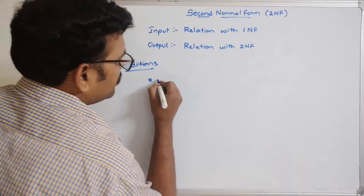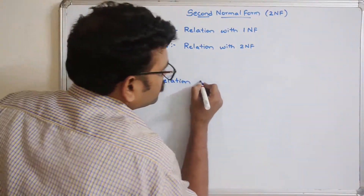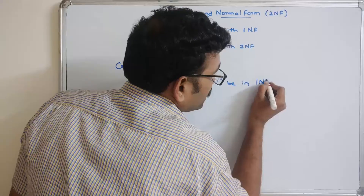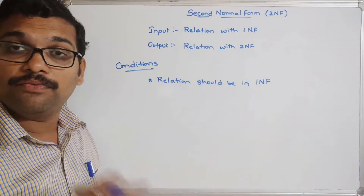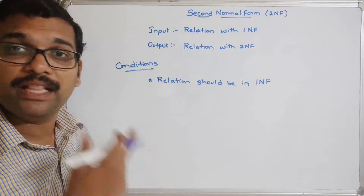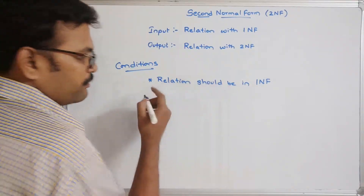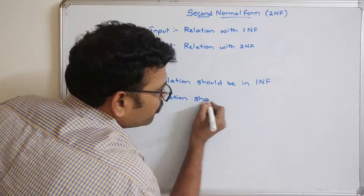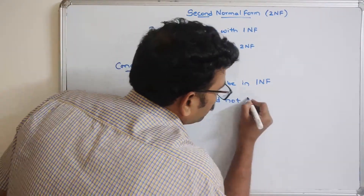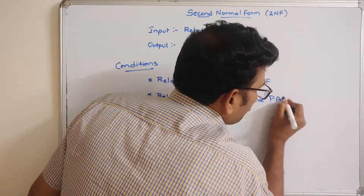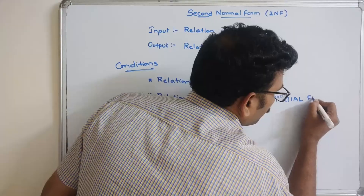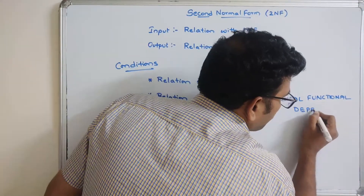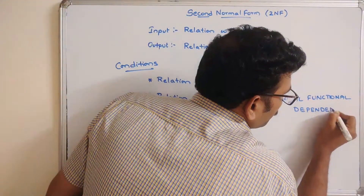The first condition is that the relation should be in 1NF. First we check whether the relation is in 1NF; if not, we have to achieve 1NF — that means make the relation satisfy 1NF. The second condition is that the relation in 1NF should not have partial functional dependency.